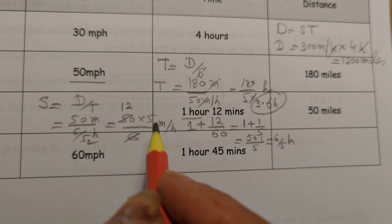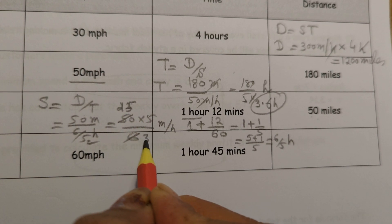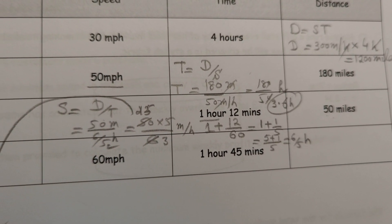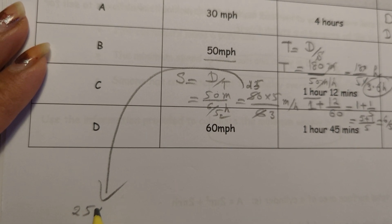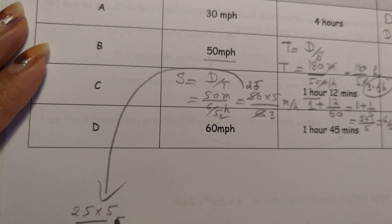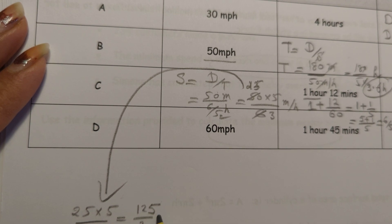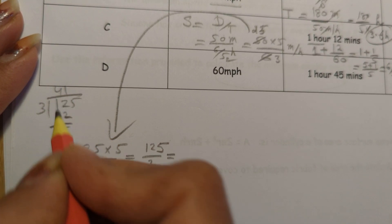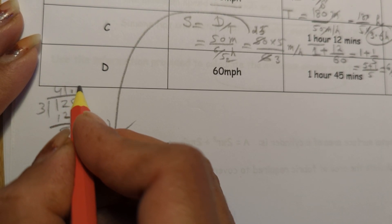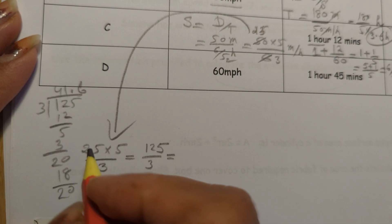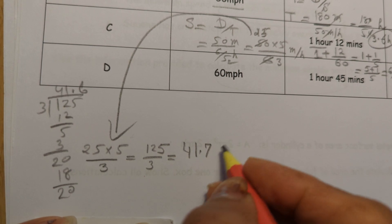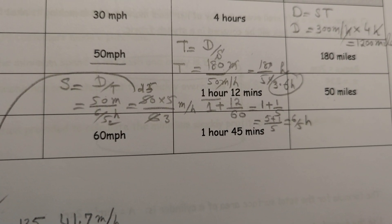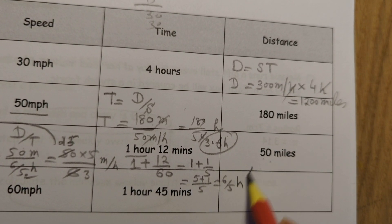Simplifying 50 times 5 over 6: 50 and 6 share a factor, giving 25 times 5 over 3, which equals 125 over 3. Rounded to one decimal place, the answer is approximately 41.7 miles per hour.